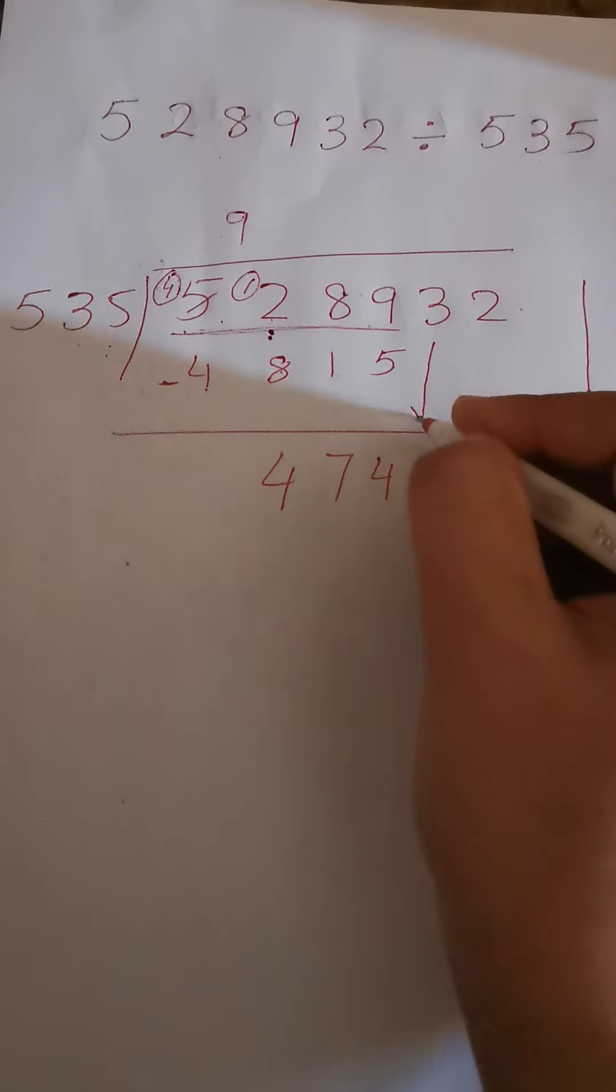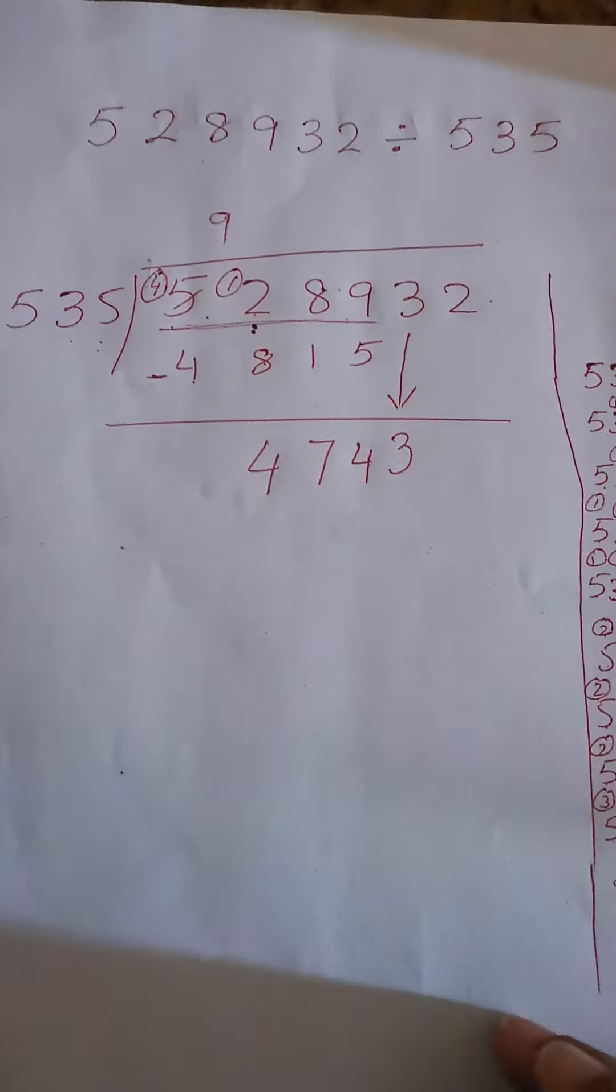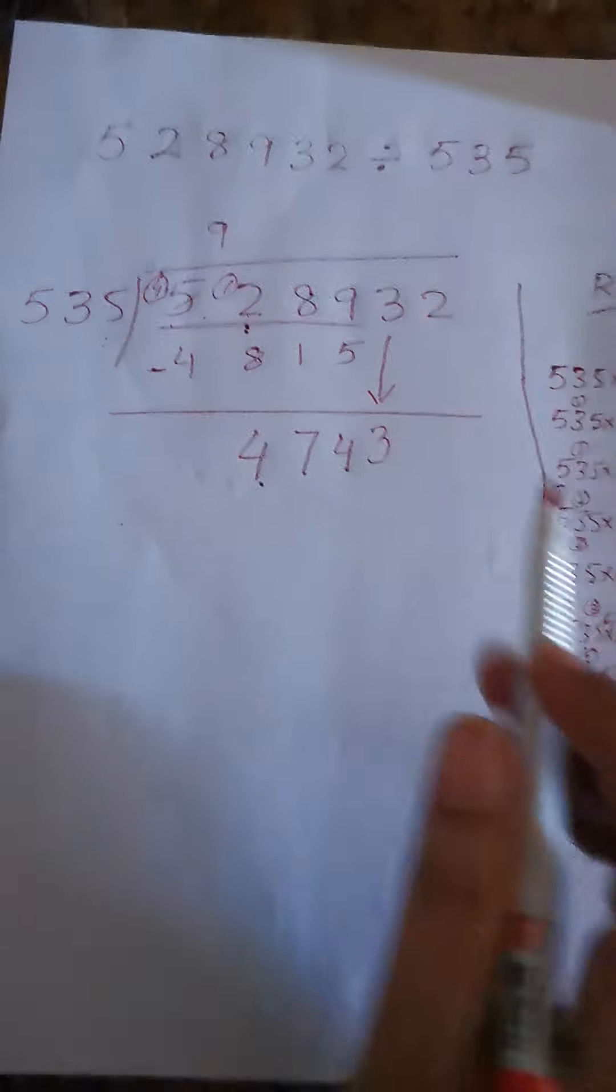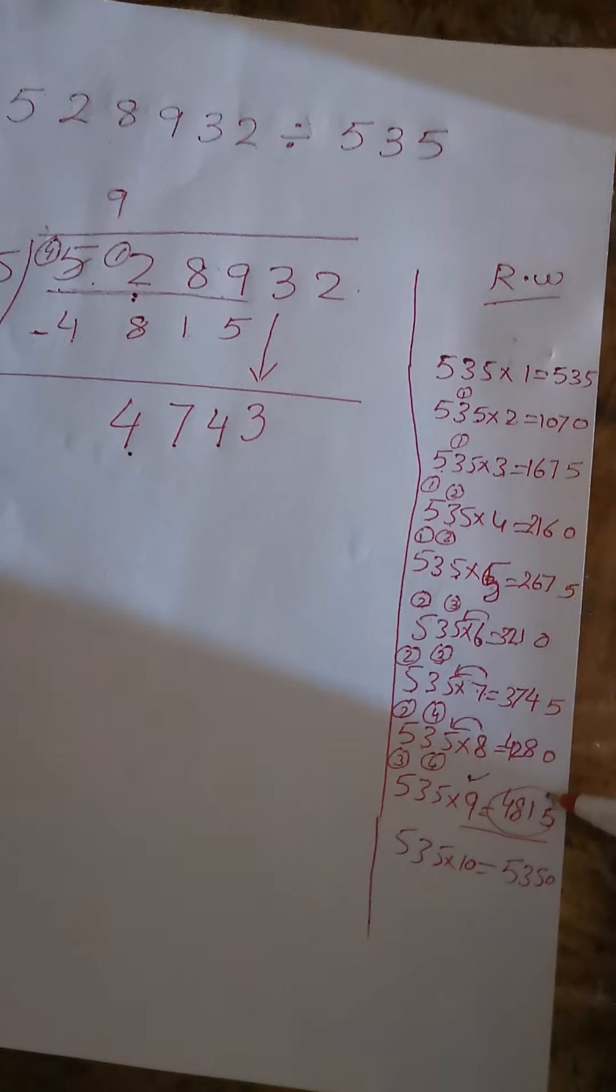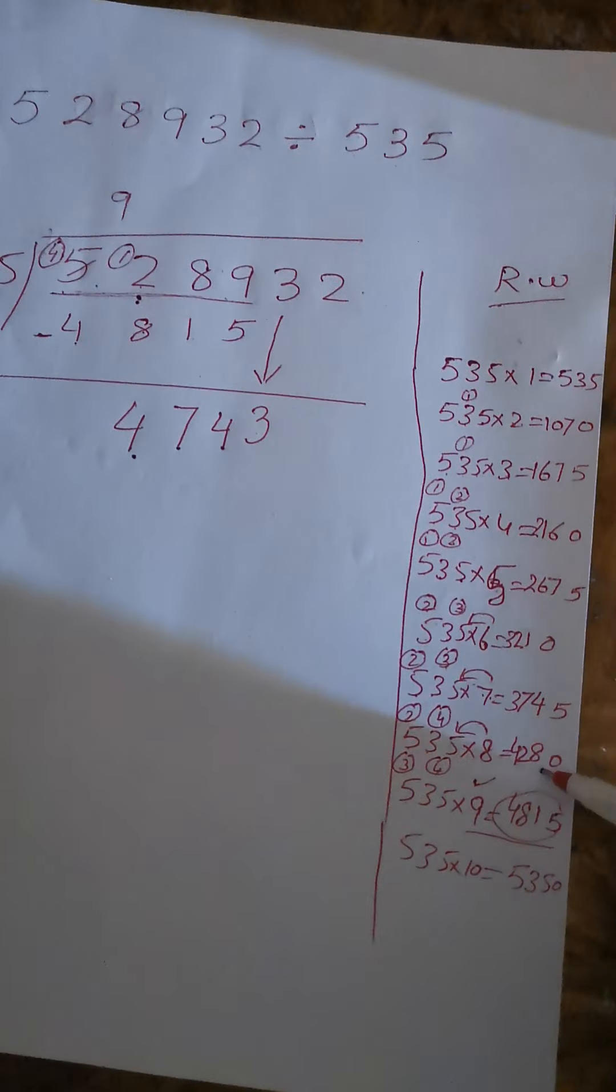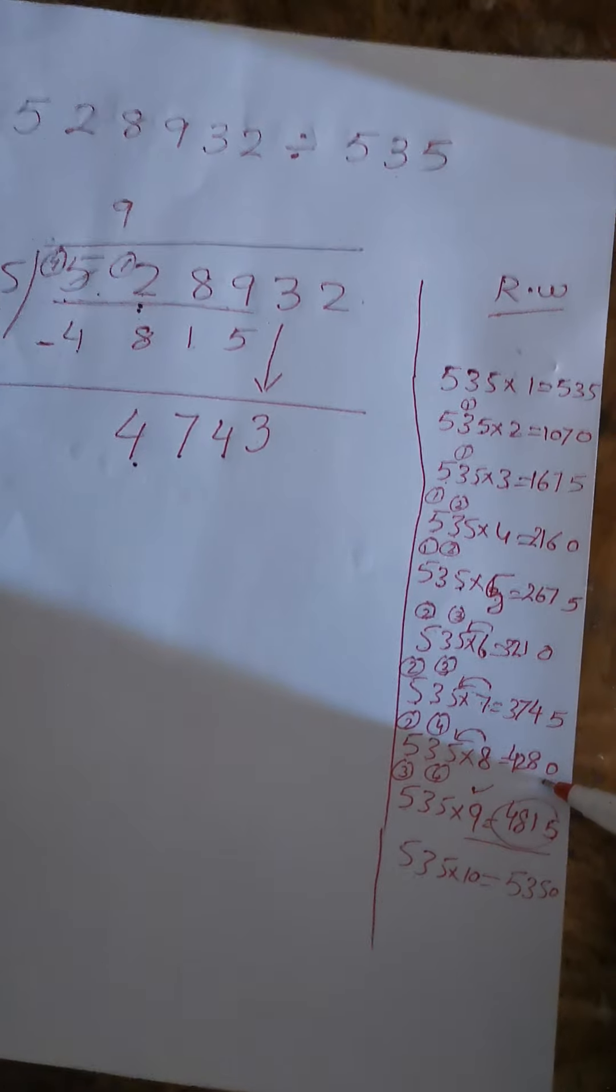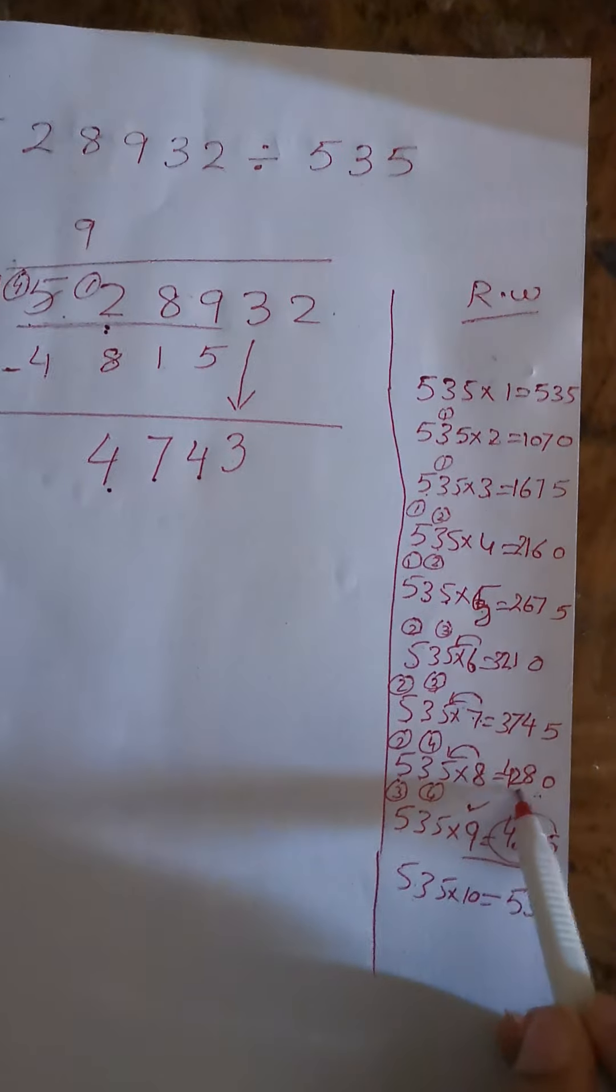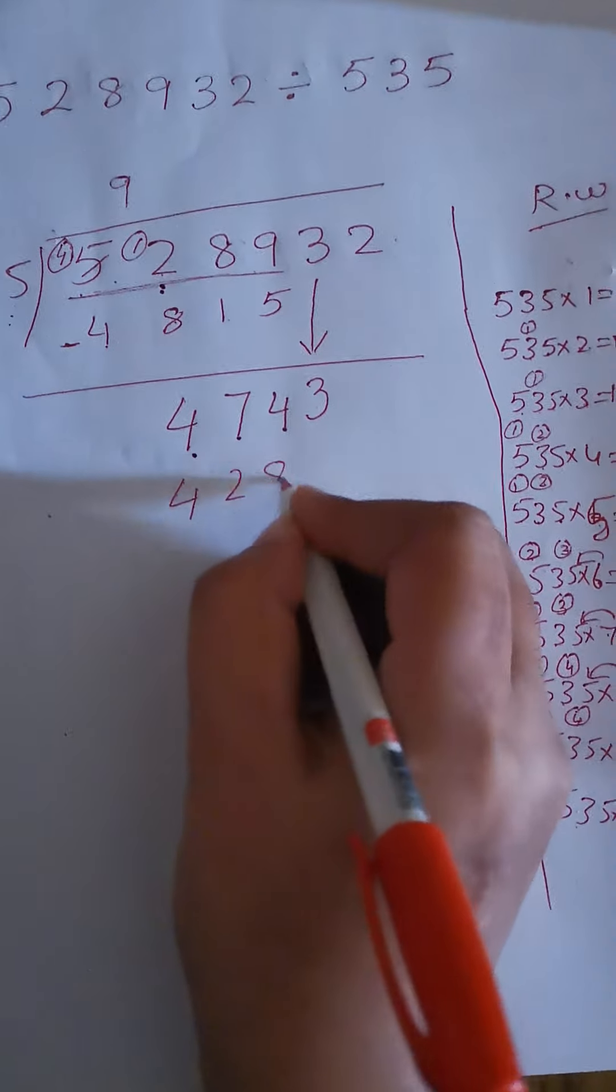Now we bring down the next number. We have to bring only one number down at a time. This is now 4743. We check which is equal or near to it. We don't have equal, but we have near to it. We have to choose the lesser number, which is 4280. That's 535 times 8.